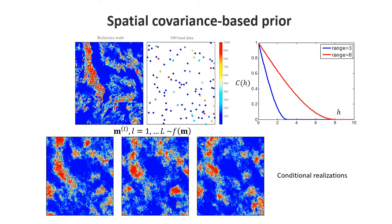There are cases where we can understand the prior information from the data itself—this is typical for geostatistics. In geostatistics, we look at some samples from a reference truth and estimate the spatial covariance—the degree of correlation seen in that reference truth. Once we have an understanding of the covariance function, we can generate models that have that particular spatial covariance and are constrained to the data. These conditional realizations, constrained to the data and reflecting the spatial correlation present, are then called samples of the prior distribution.